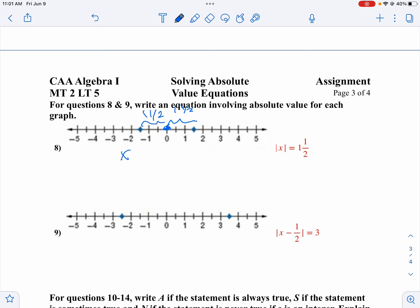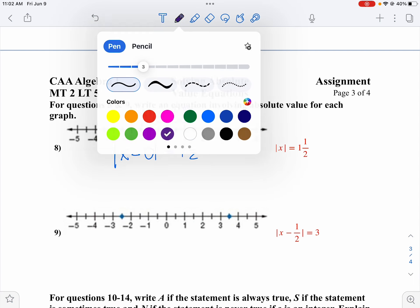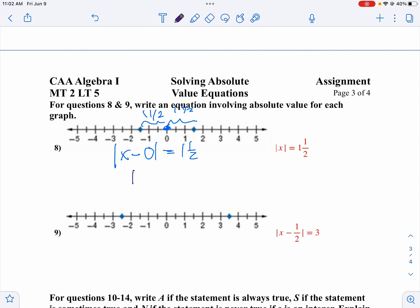So it will be the absolute value of x minus zero equals one and a half. I can simplify that a tad. I don't like to put x minus zero, I can just put x. So I'm going to say the absolute value of x equals one and a half. And there's your answer for that one.